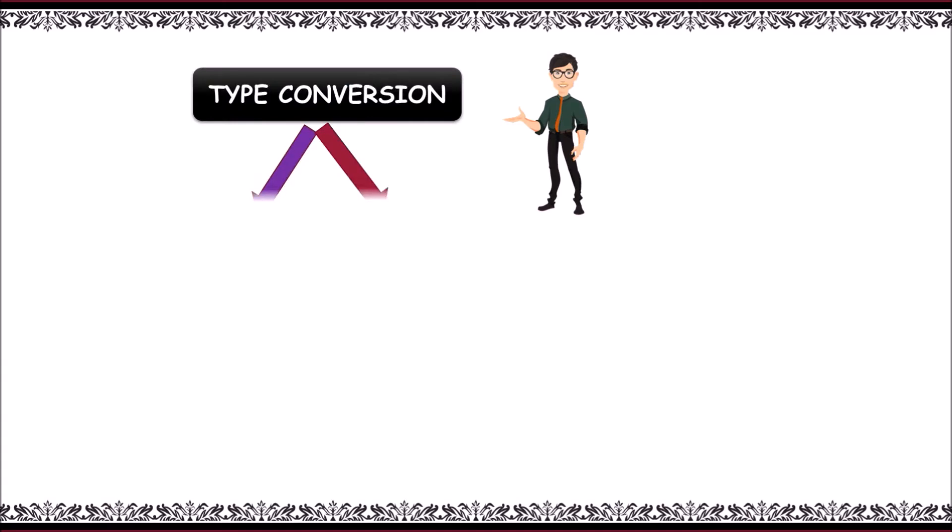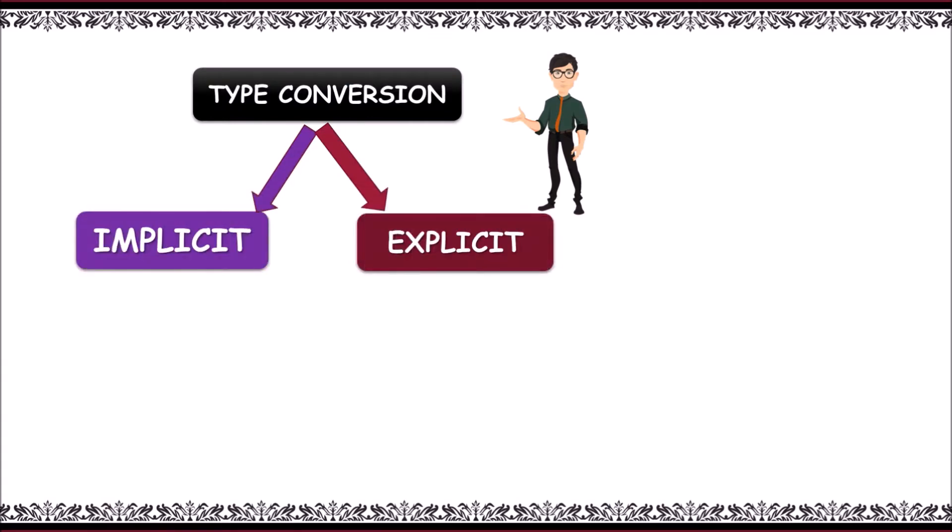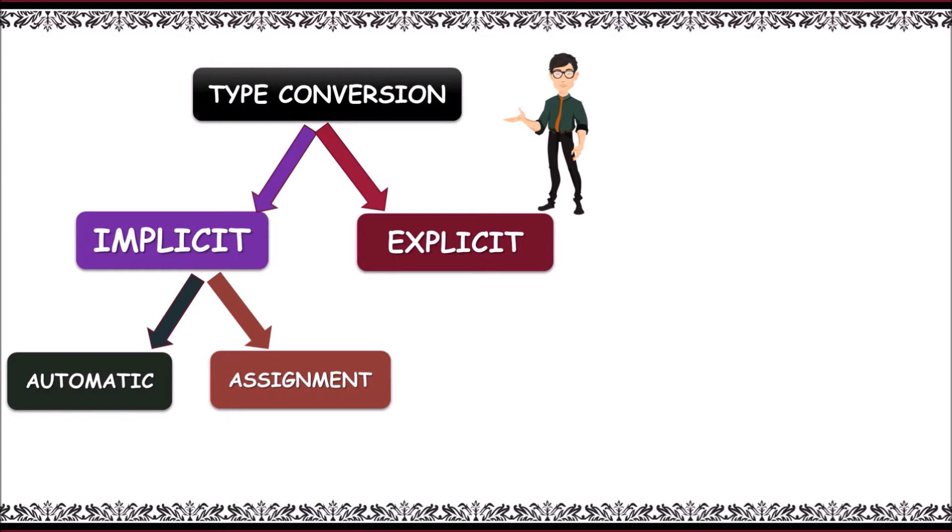There are two types of type conversions exist. They are implicit type conversion and explicit type conversion. Further, implicit type conversion is divided into two categories like automatic type conversion and assignment type conversion.